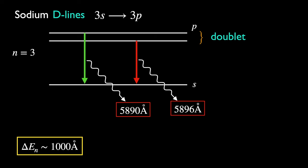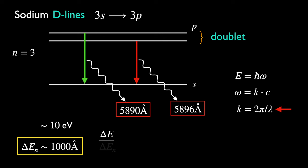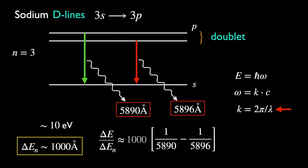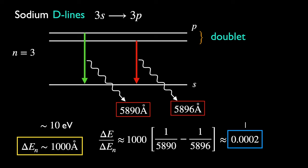For this conversion we just need the Planck formula and the relation between angular frequency and wave number for light. Recall that k is related to the wavelength accordingly. From earlier, delta En is roughly 10 electron volts. The energy spacing between the doublet relative to this value is about 2 out of 10,000 of the energy between the first excited state and the ground state. Thus this splitting is aptly called the fine structure — it is observed everywhere except the orbital s.